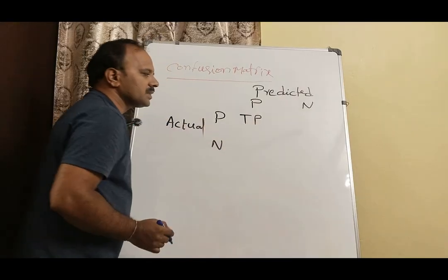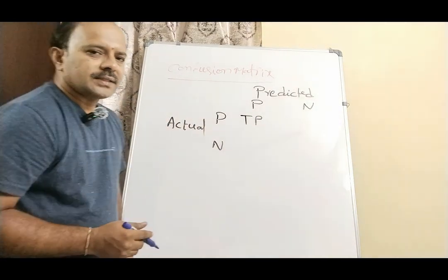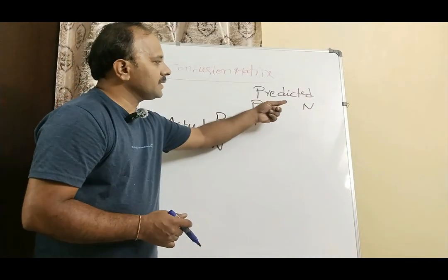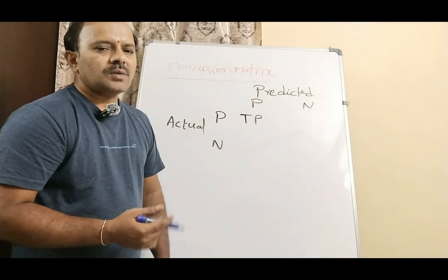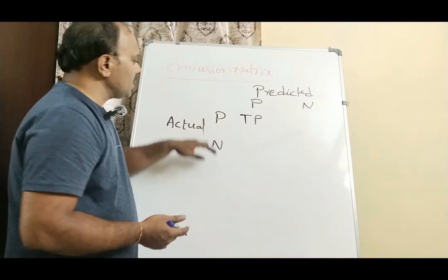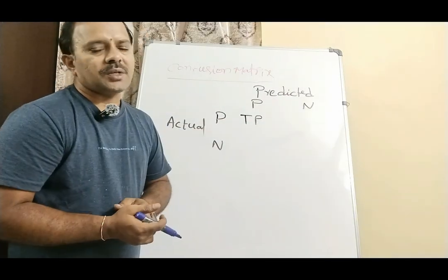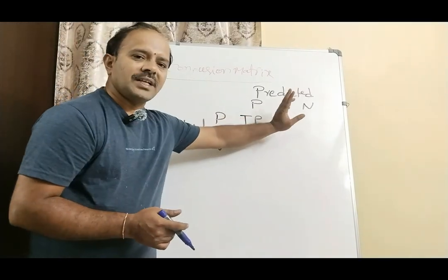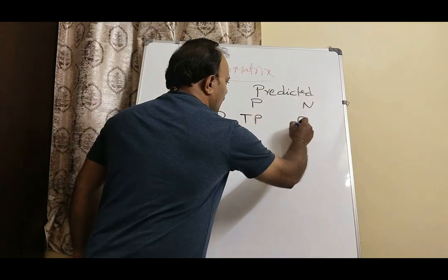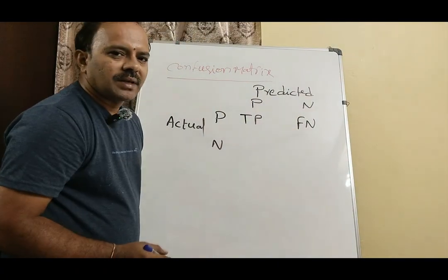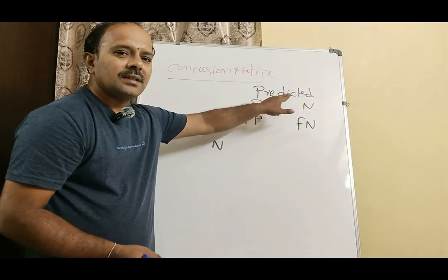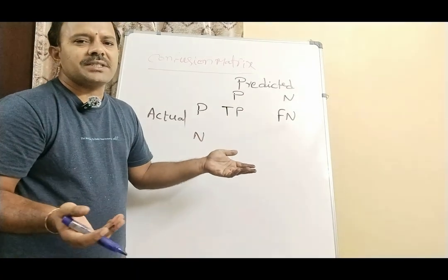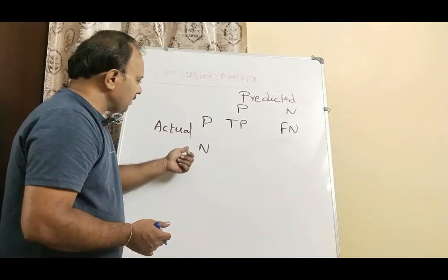In another case, the actual value is positive but the model predicted it as negative. What is its representation? It is false negative, labeled as FN, because the model predicted the actual positive as a negative.